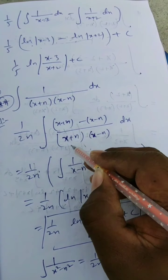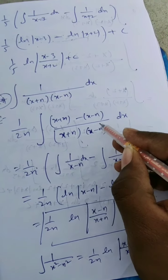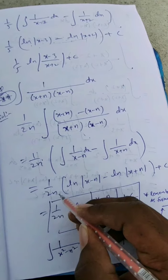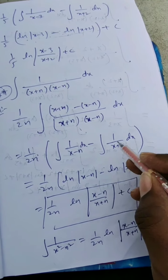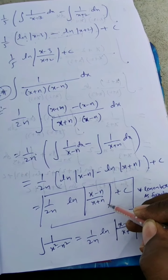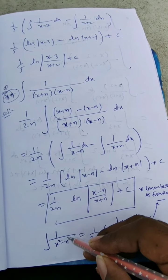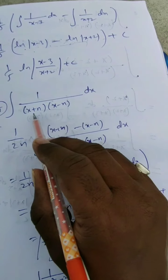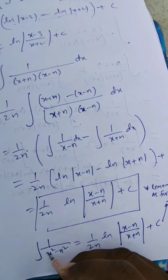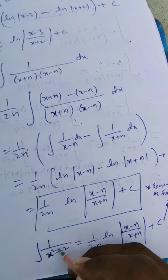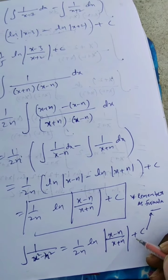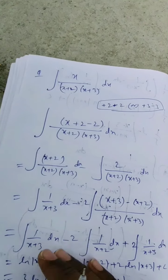Separating the two parts: x plus n cancels giving 1 by x minus n, and x minus n cancels giving 1 by x plus n. So the result is 1 by 2n times ln|x minus n| minus ln|x plus n| plus c, which equals 1 by 2n times ln|x minus n upon x plus n| plus c. Since x plus n into x minus n equals x squared minus n squared, the formula is: integral of 1 by x squared minus n squared equals 1 by 2n ln|x minus n upon x plus n| plus c.